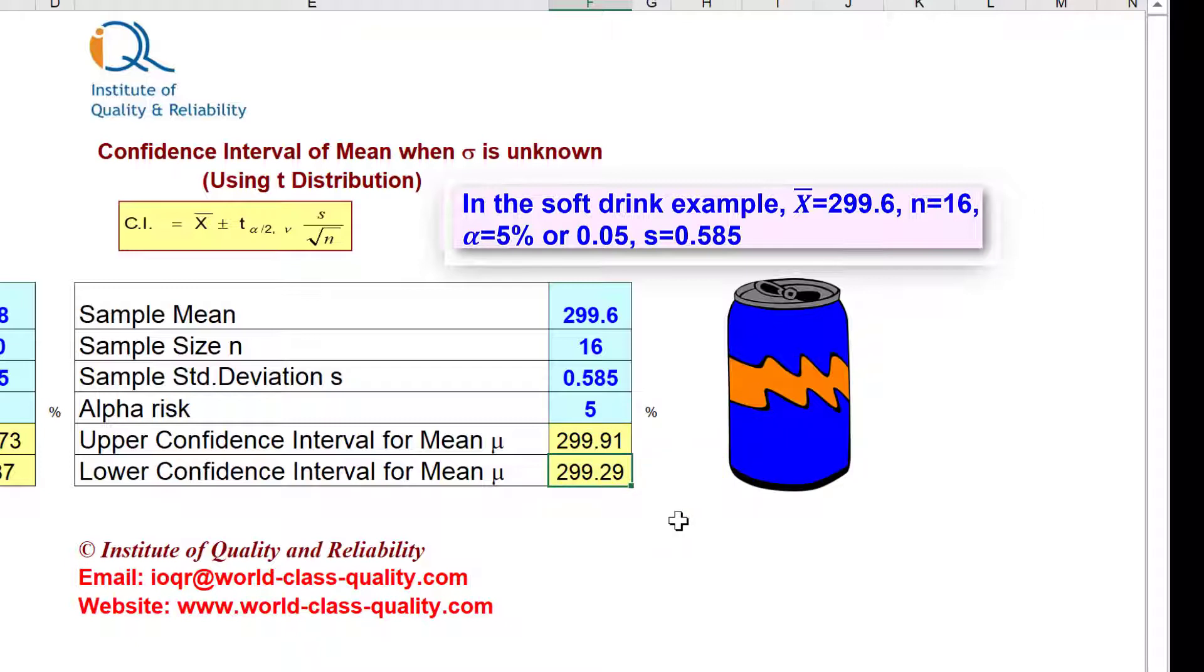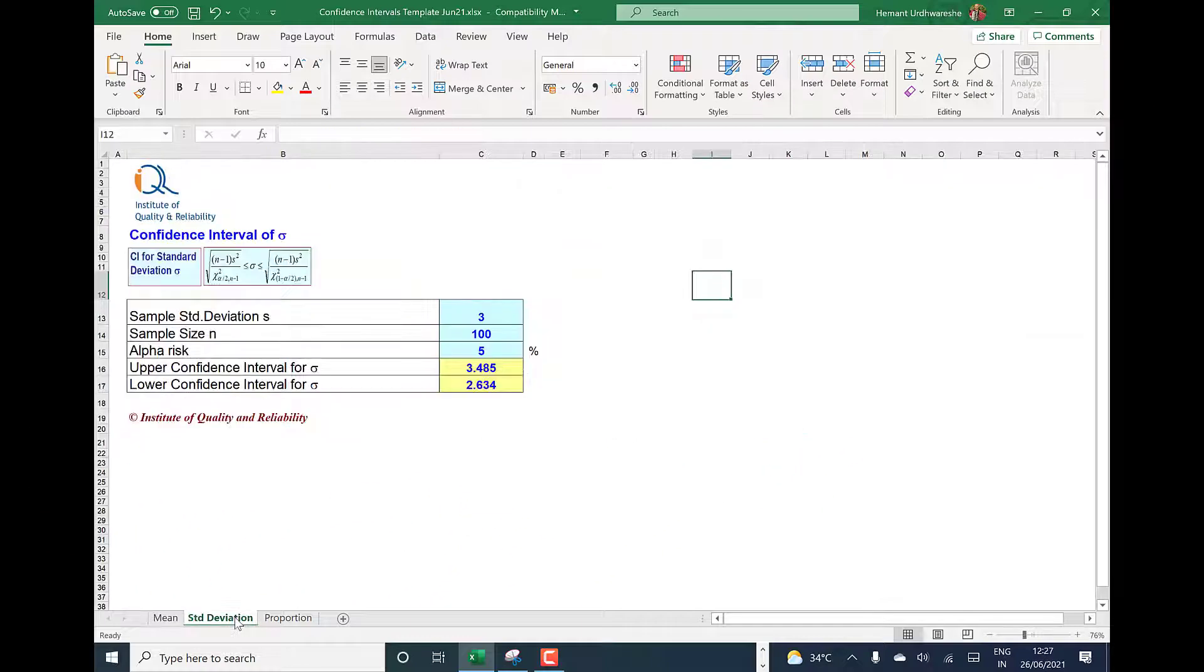We get the same values that we calculated: 299.91 and 299.29. The template also supports calculation of confidence intervals for standard deviation and also calculation of confidence intervals for proportions.